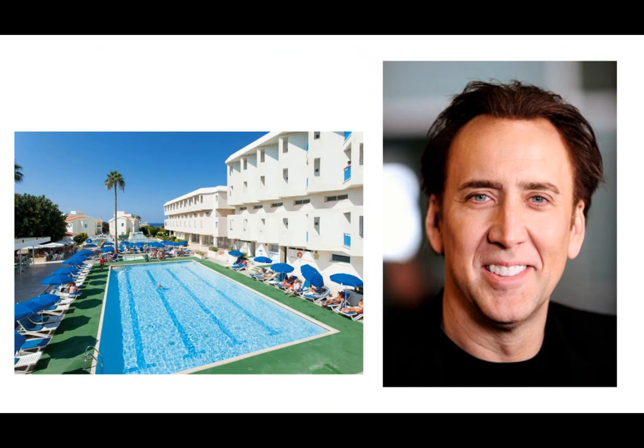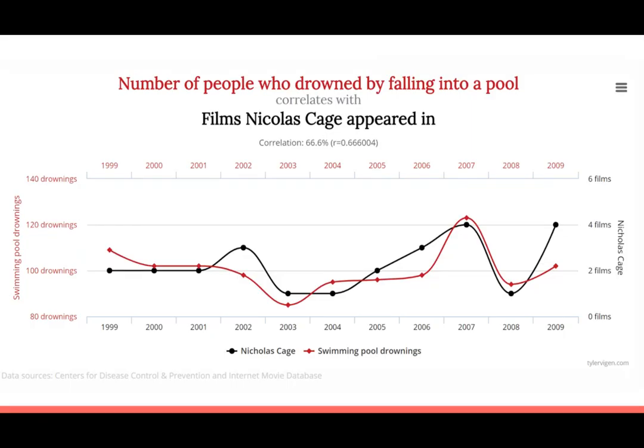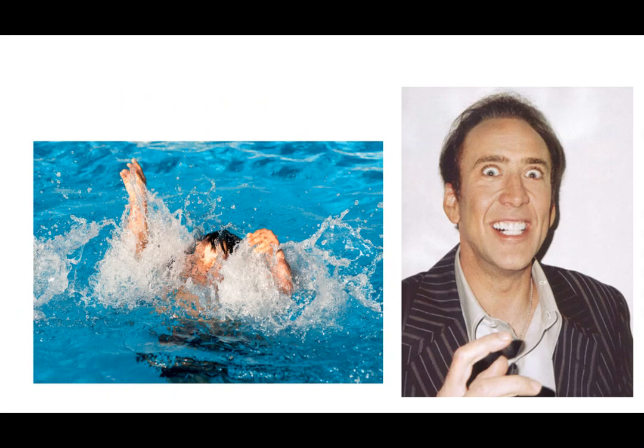Another example would be swimming pools and the actor Nicolas Cage. Even though these two things have nothing in common with each other, data from the Center of Disease Control and Prevention and the Internet Movie Database suggests that the number of people who drowned by falling into pools correlates with the films Nicolas Cage appeared in each year from 1999 to 2009. This is another example of spurious correlation.